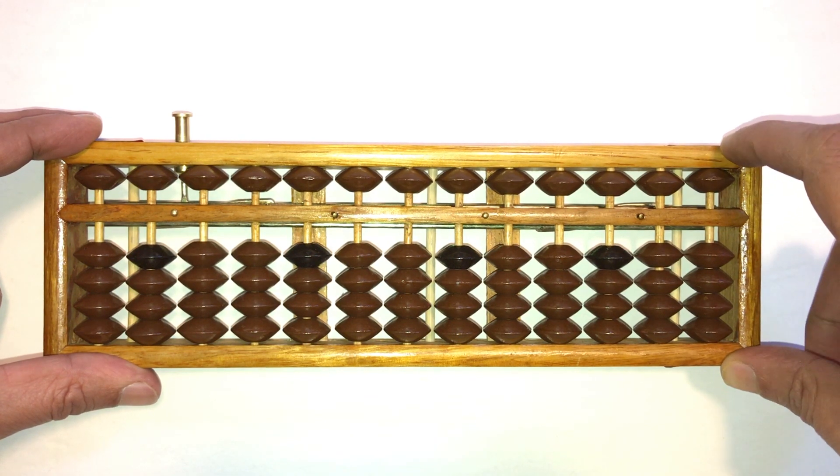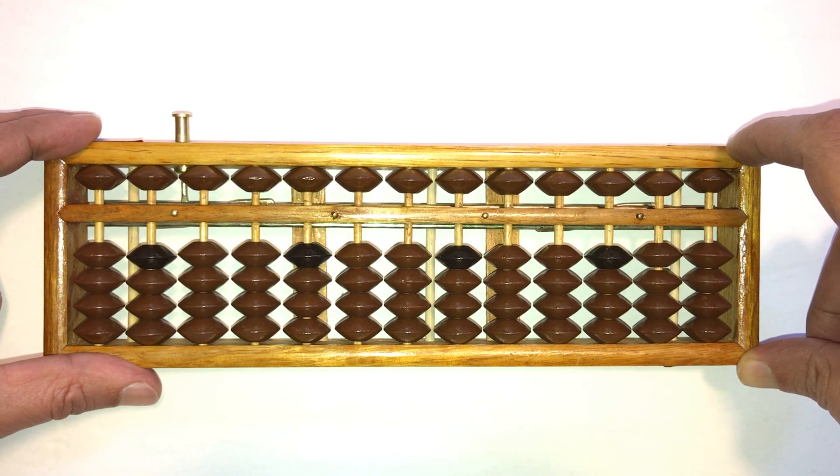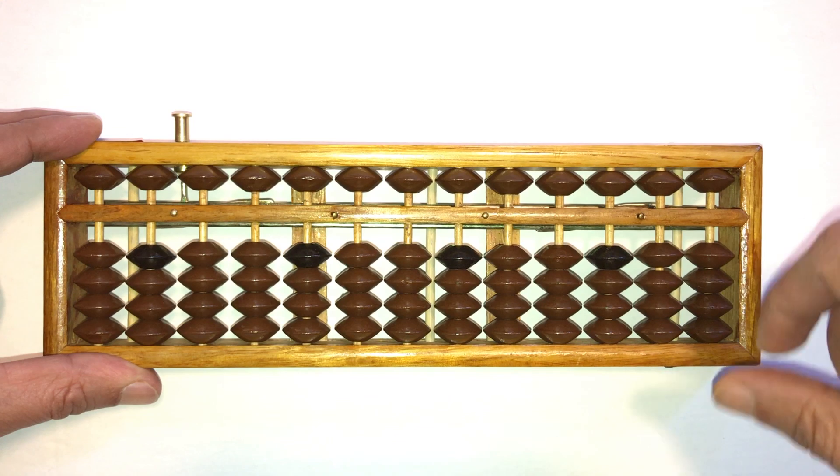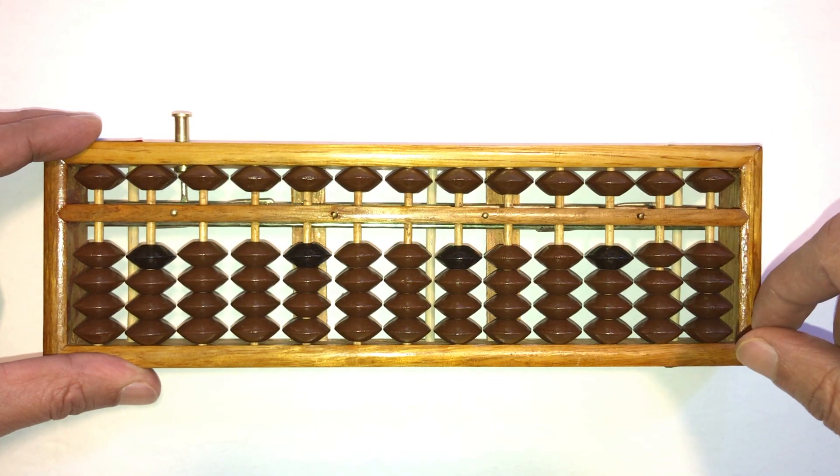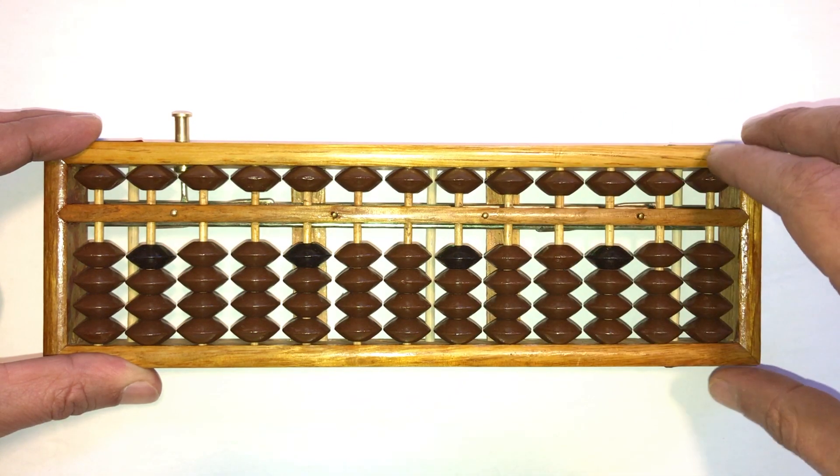For your student to excel at mind math, instead of calculating the traditional way, you want them to visualize the abacus in their head. What that means is they need to move their fingers like they're moving beads on an imaginary abacus and visualize the movement of the beads in their head. Once all the beads are moved, the student visualizes the beads that are left touching the answer bar to arrive at the answer.